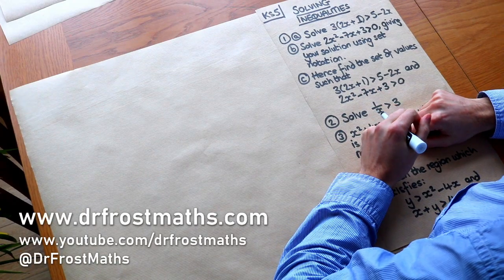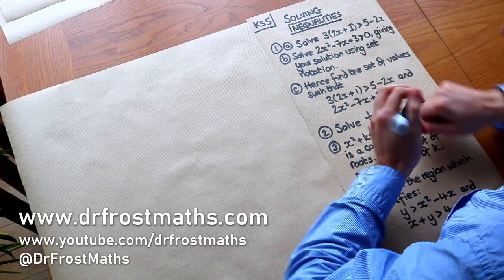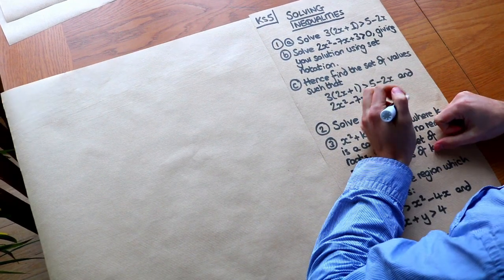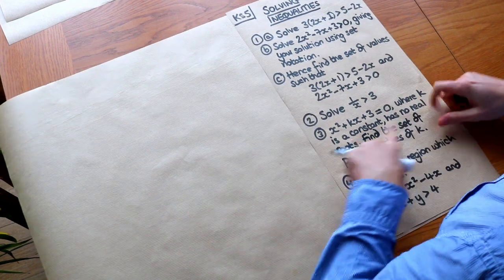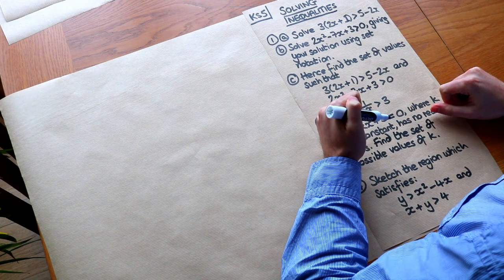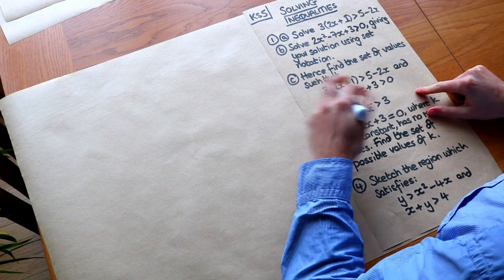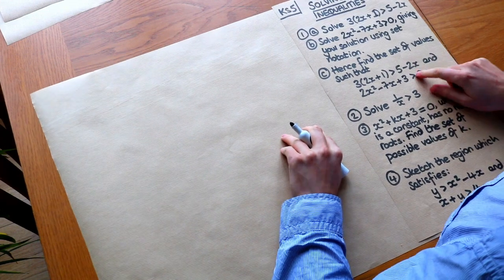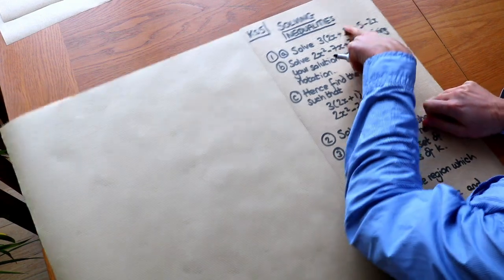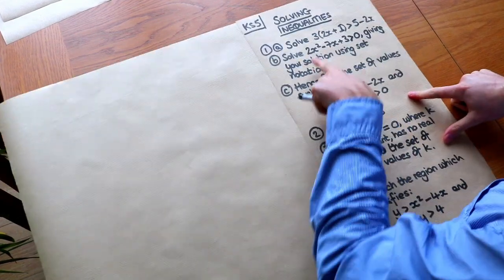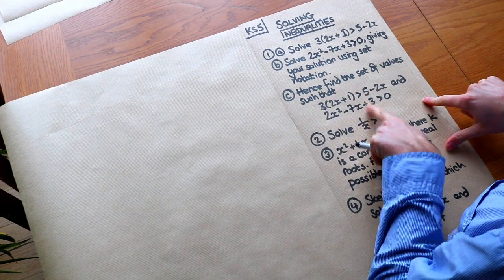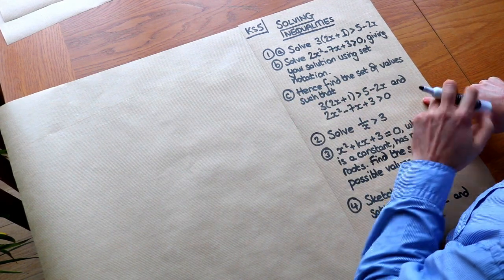Hello and welcome to this Dr. Frost Maths video on Key Stage 5 Solving Inequalities. The stuff in question 1 is a recap from GCSE, but it'll be good to go over it again. Questions 2, 3 and 4 cover material you probably wouldn't have encountered without A-level study. There are two types of inequality to deal with: linear inequalities and quadratic inequalities, and you also need to combine two inequalities.